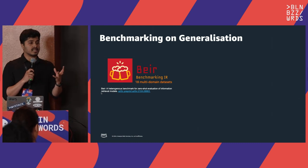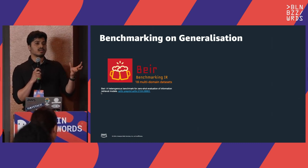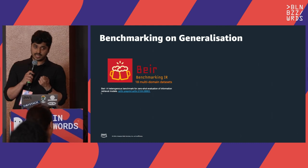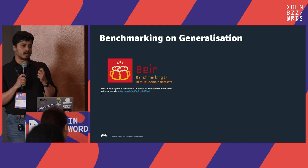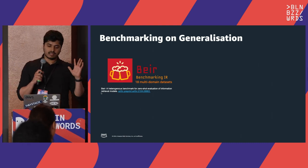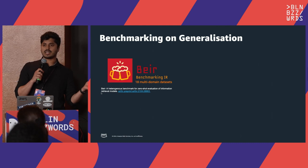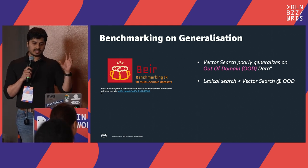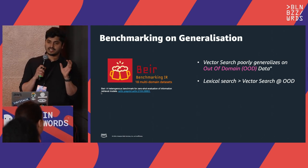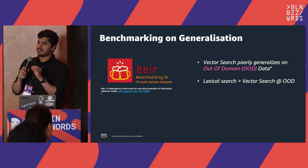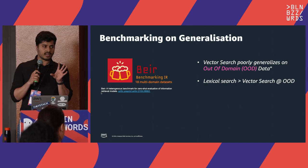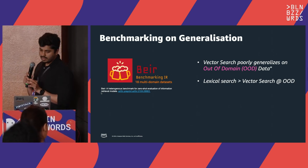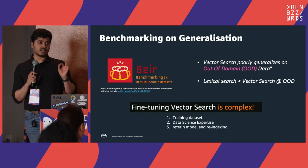An important parameter to consider is generalization — how well these two approaches generalize on different domain data without fine-tuning. Research was conducted in BEIR, Benchmarking Information Retrieval, where 18 datasets from different domains were tested. The results were quite surprising: vector search was found to poorly generalize on out-of-domain data, meaning whenever the machine learning model is not trained on the particular data you are dealing with, vector search provided results with less quality compared to keyword search.